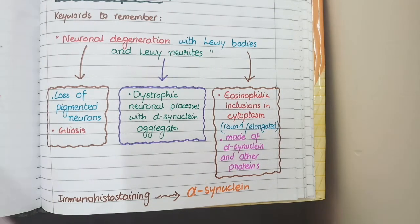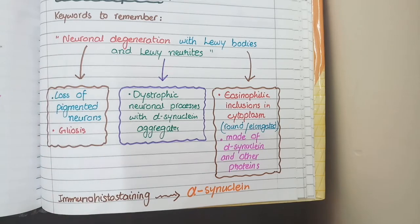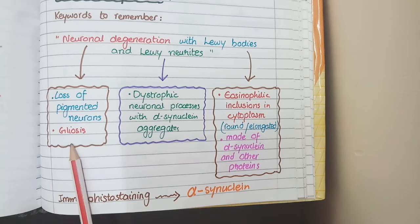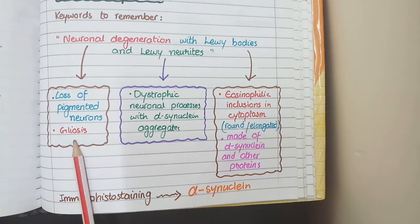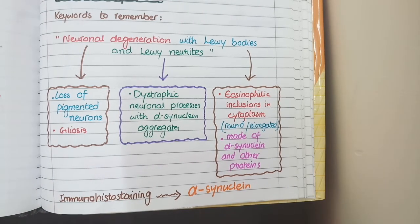The first keyword is neuronal degeneration. You will see loss of pigmented neurons from the substantia nigra, and this loss of neurons will be replaced by formation of fibrous tissue or glial tissue, that is called gliosis. So you see loss of pigmented neurons replaced by gliosis.